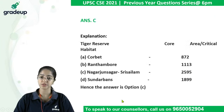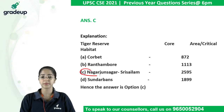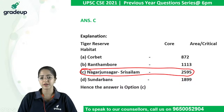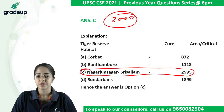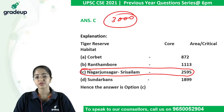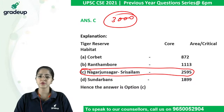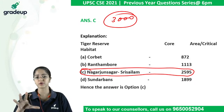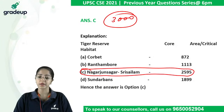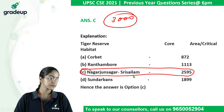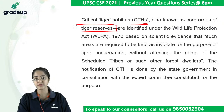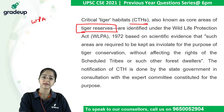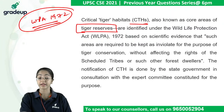Answer is C — Nagarjunasagar-Shree Sailam. Its critical tiger habitat area is about 2500–3000 square kilometers, which is larger than Corbett, Ranthambore, and Sundarbans. Remember: Corbett has less critical tiger habitat than Nagarjunasagar-Shree Sailam. These core areas of tiger reserves are identified under the Wildlife Protection Act of 1972 — not the Environment Protection Act or the National Biodiversity Act. This is very important to know.